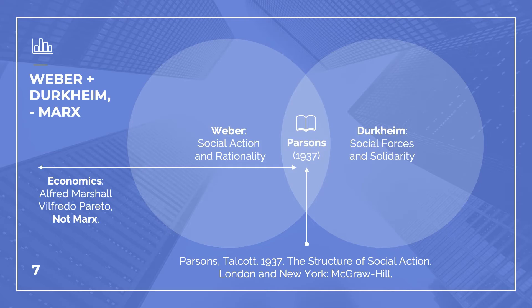Parsons reads these four together — Durkheim, Weber, Pareto, and Marshall — because he wants to account for agency and structure in social systems: how we occupy social roles to maintain social order. Weber plays most prominently here, and Marx doesn't get much of a reading at all. Parsons says he got all he needed on the economy from Weber and the economists, so Marx was unnecessary.